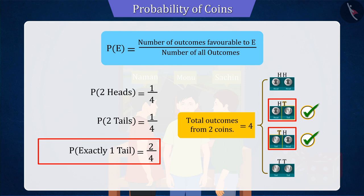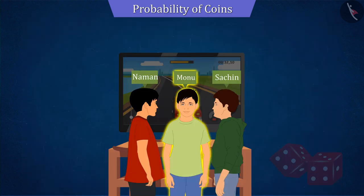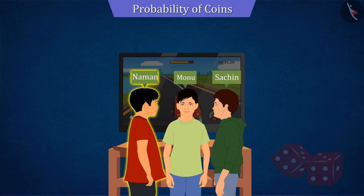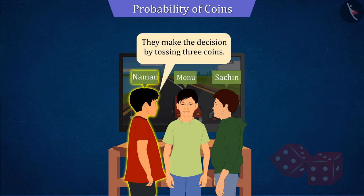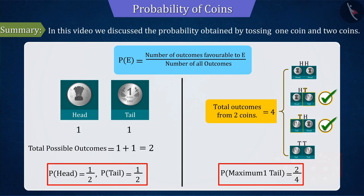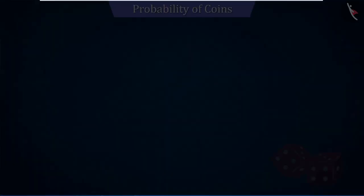From the results obtained, we can say that Monu might get to play first. But Naman is not happy with this and asks to take the decision by tossing three coins instead of two coins, which we will see in the next video. In this video, we discussed the probability obtained by tossing one coin and two coins. In the next video, we will find the probability obtained by tossing three coins.